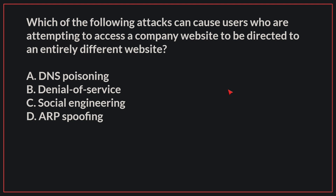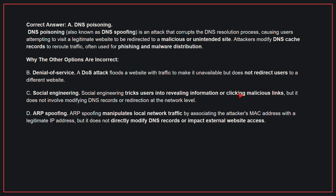Which of the following attacks can cause users who are attempting to access a company's website to be directed to an entirely different website? The correct answer is A, DNS poisoning. DNS poisoning is an attack that corrupts the DNS resolution process, causing users attempting to visit a legitimate website to be redirected to a malicious or unintended site. Attackers modify DNS cache records to reroute traffic, often used for phishing and malware distribution.